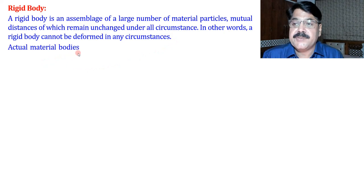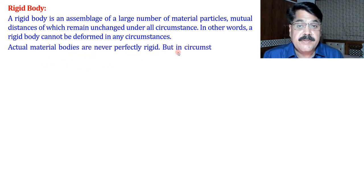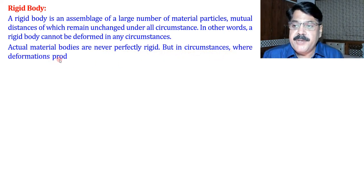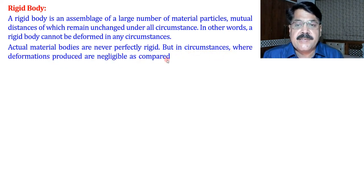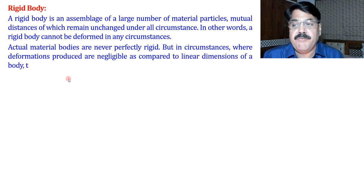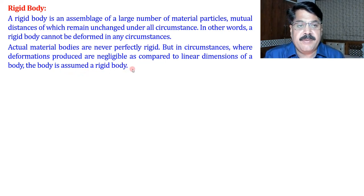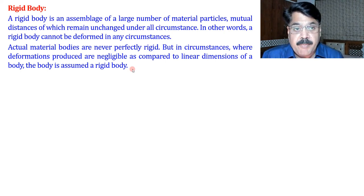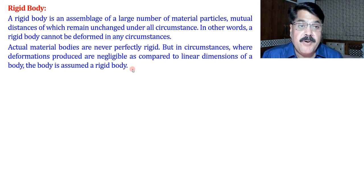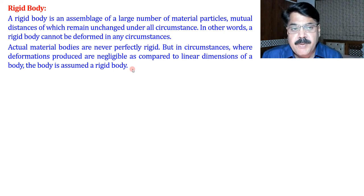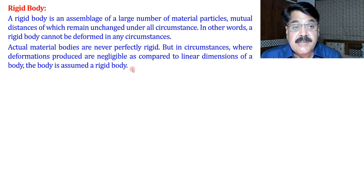Actual material bodies are never perfectly rigid, but in circumstances where deformations produced are negligible compared to the linear dimensions of the body, the body is assumed to be a rigid body. That is, if forces are large enough to produce deformations but those deformations are negligible compared to the corresponding linear dimensions, we assume the body as rigid for all practical purposes.